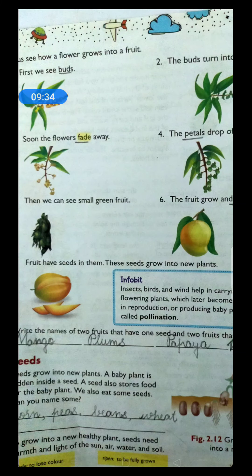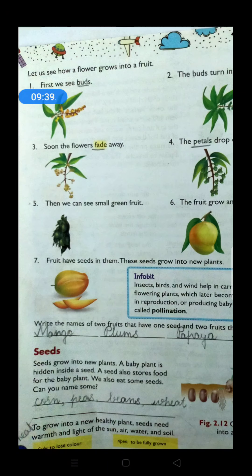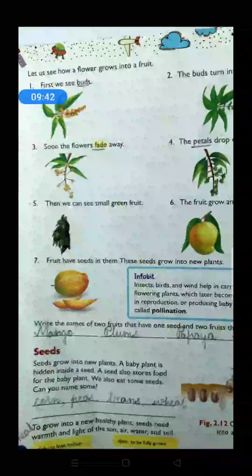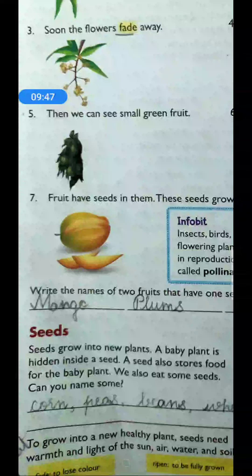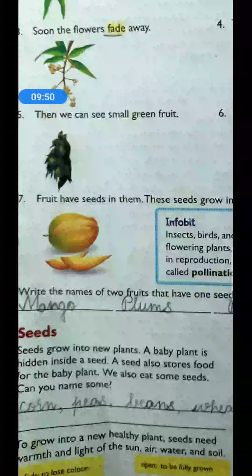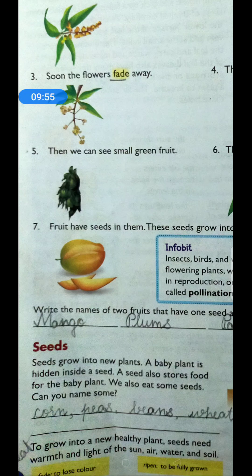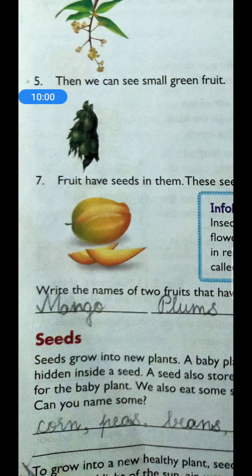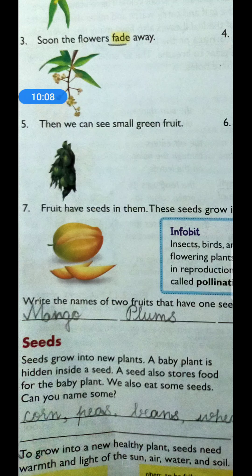We cut the fruit and whatever seeds are inside, we can get a new plant from those seeds. Is it okay, children? Now let us learn more about seeds. Seeds grow into new plants — we have already discussed that. A baby plant is hidden inside a seed. Underline the word 'hidden.' Inside a seed, we can see a little baby plant. Seeds also store food.